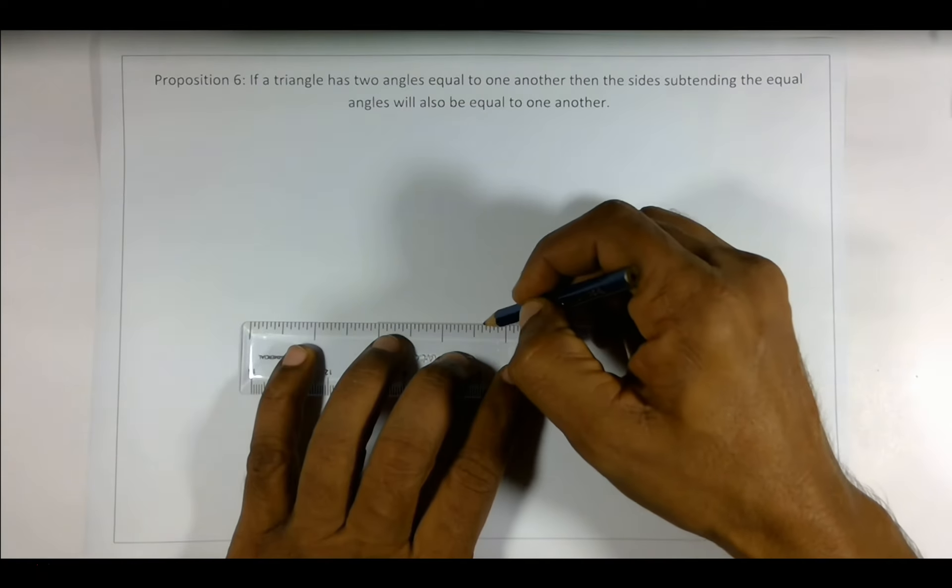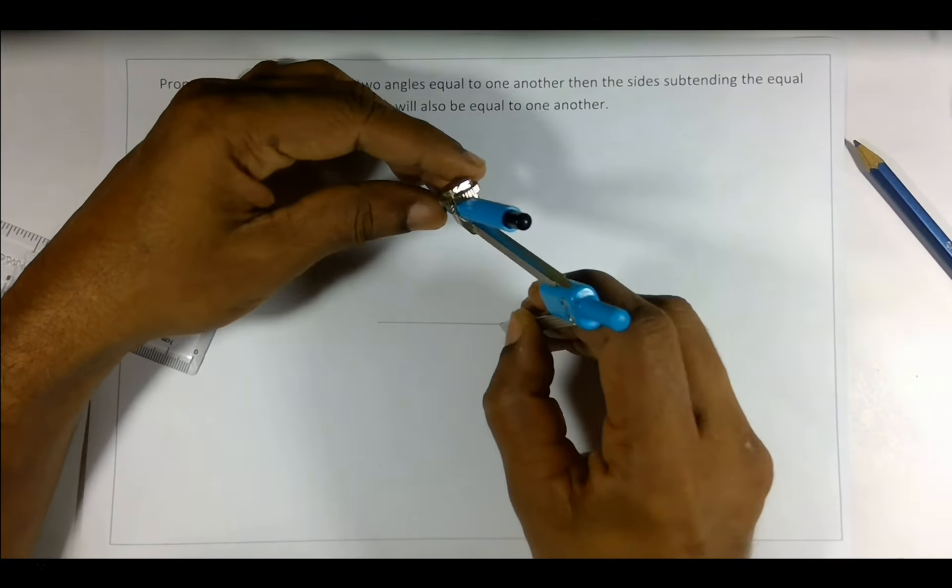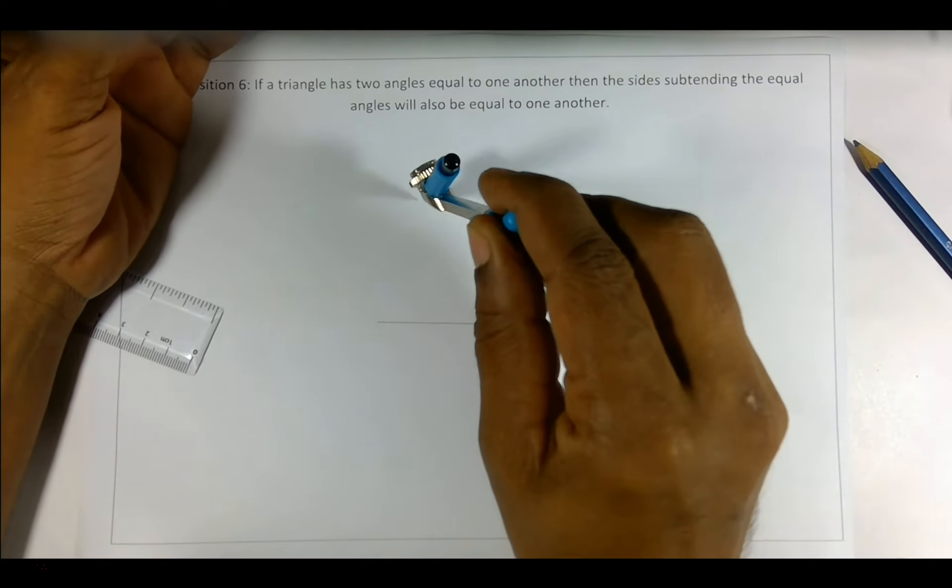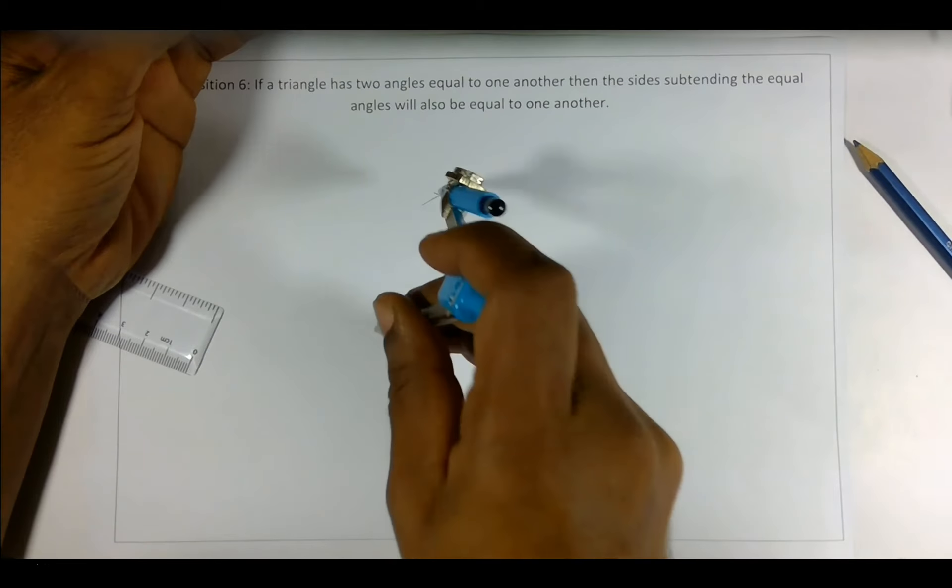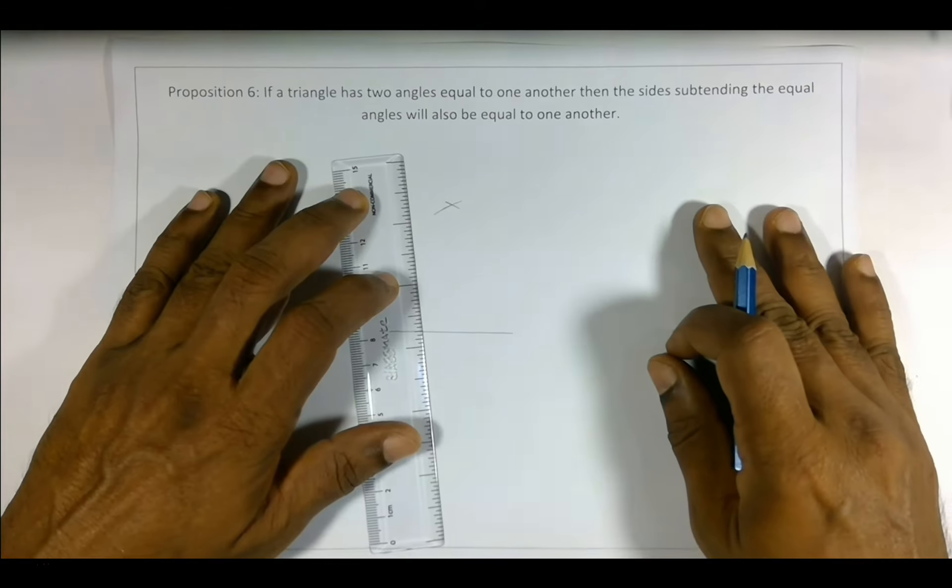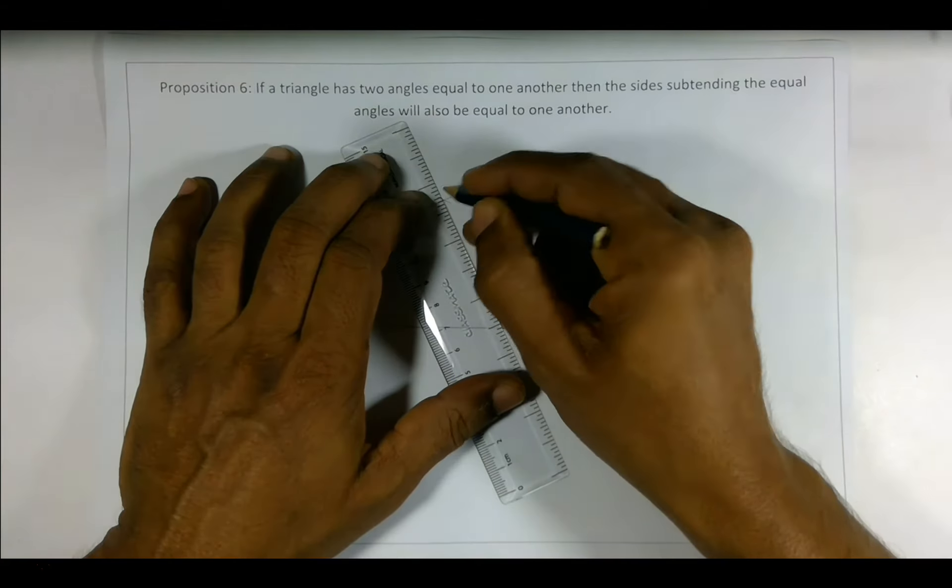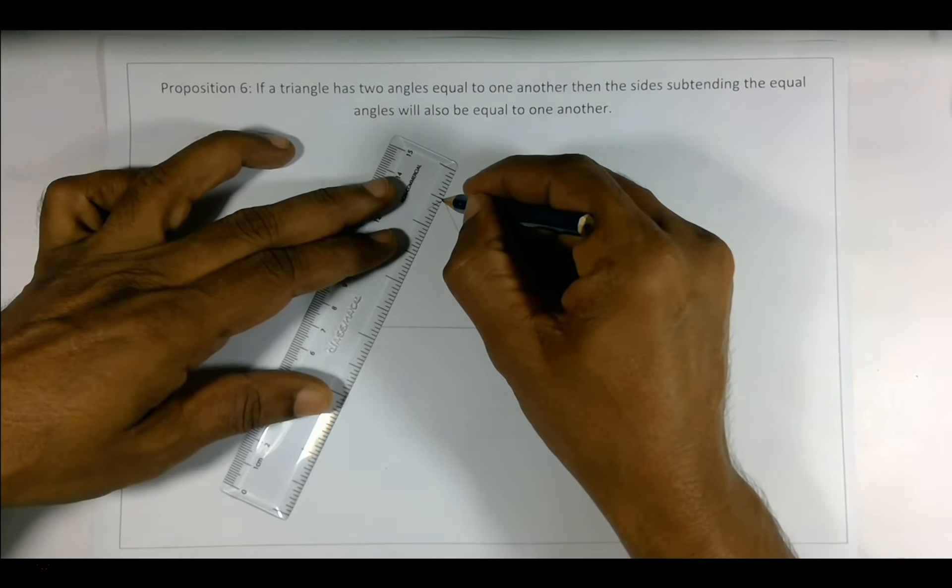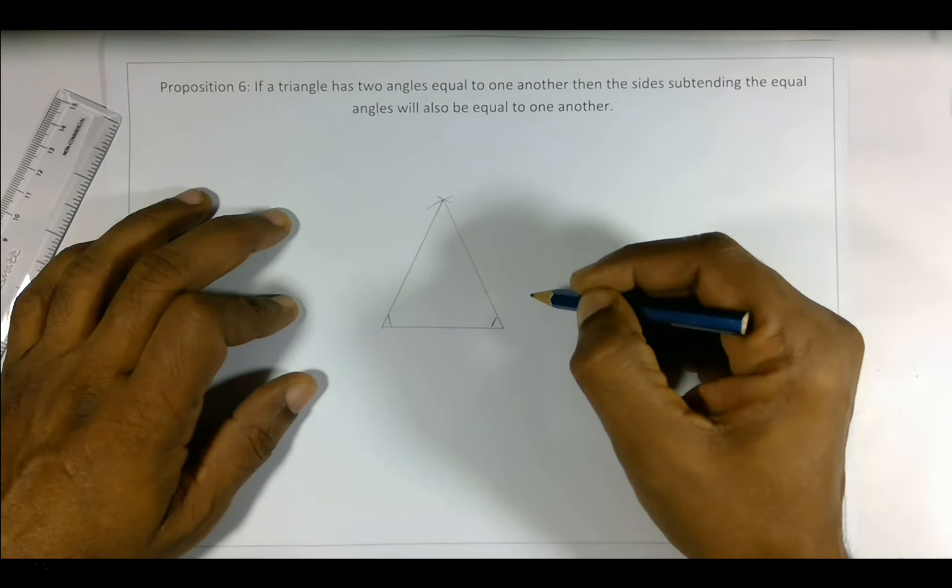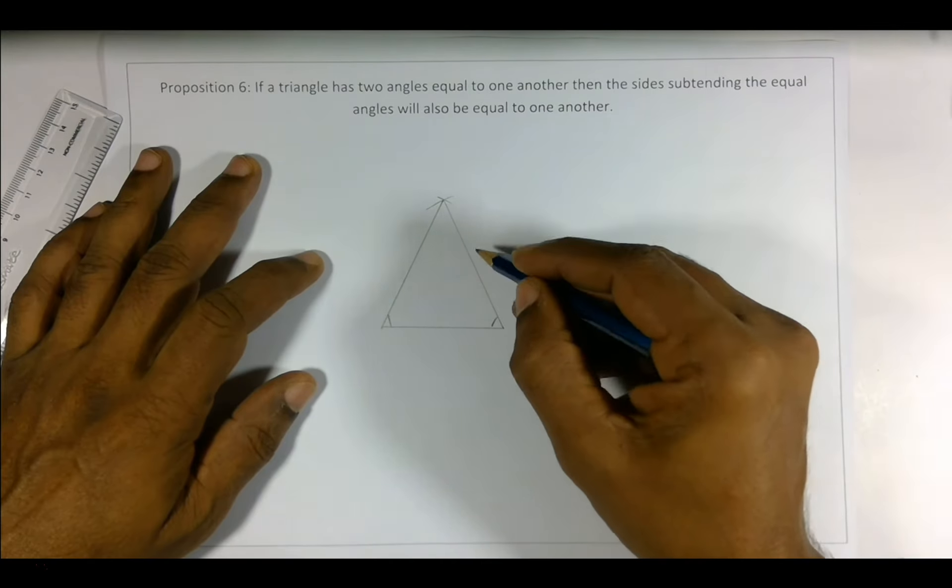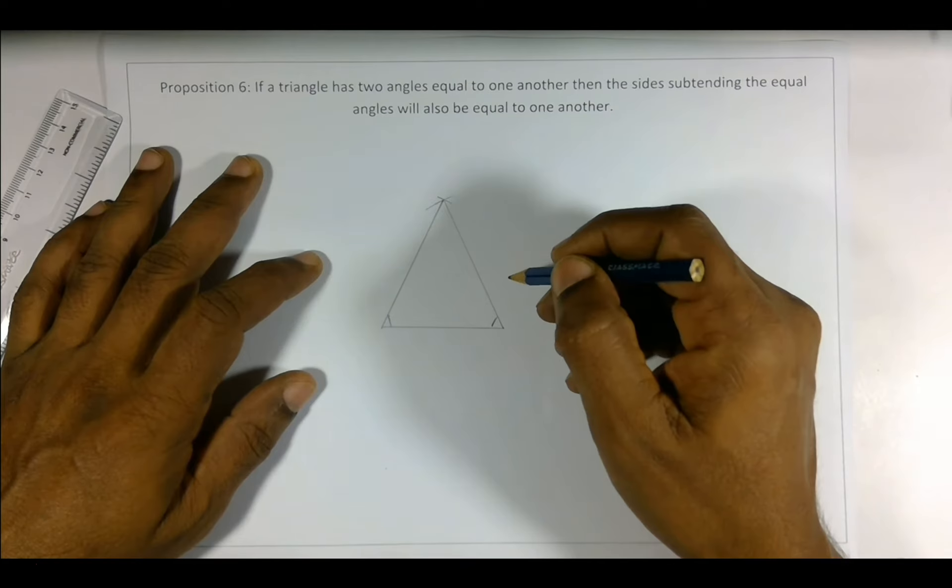Yes, you have these two angles equal, then the two sides are also equal. How do we prove this?